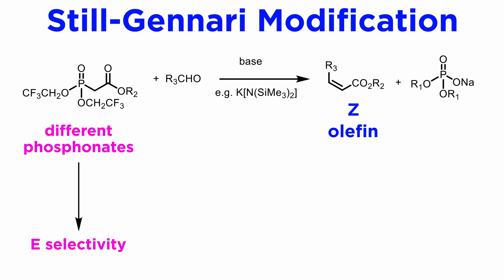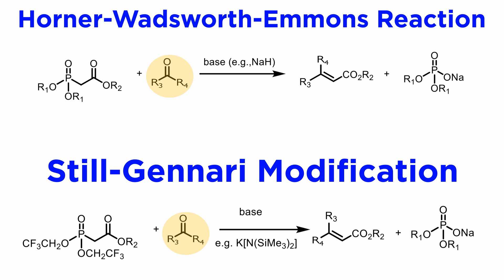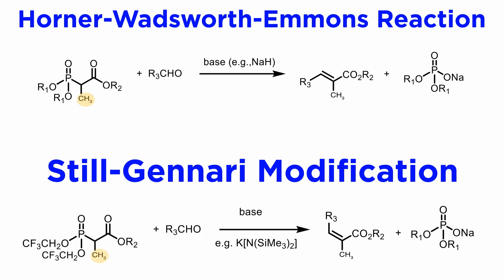A detailed discussion of these results is beyond the scope of this tutorial. Both the HWE reaction and the Still-Gennari protocols can be applied to simple ketones, and at times these reactions retain their high E or Z selectivity, at least for methyl ketones. Similarly, alpha-alkyl phosphonyl esters can also lead to high selectivity, especially when the alkyl group is the smallest possible — a methyl group.